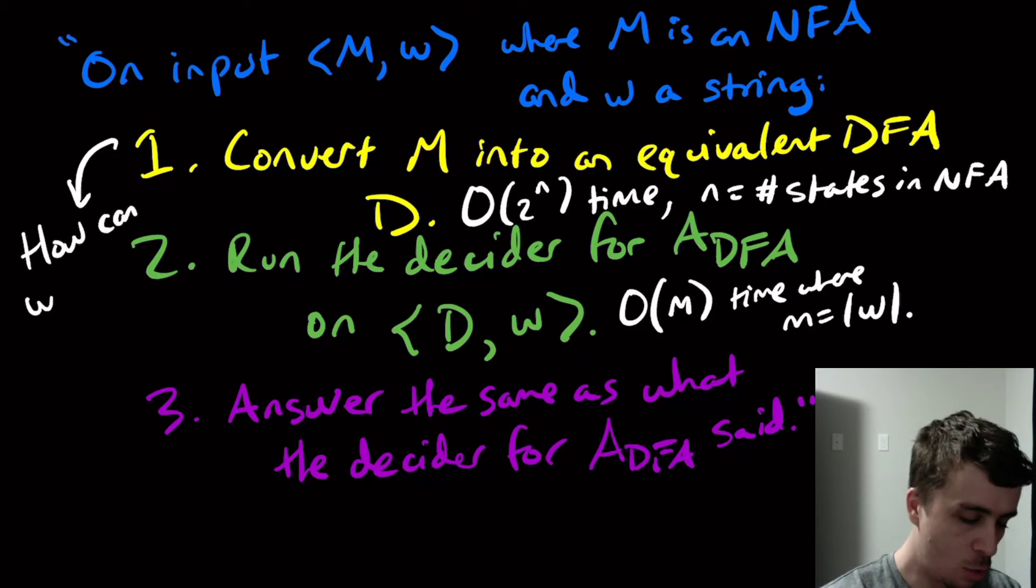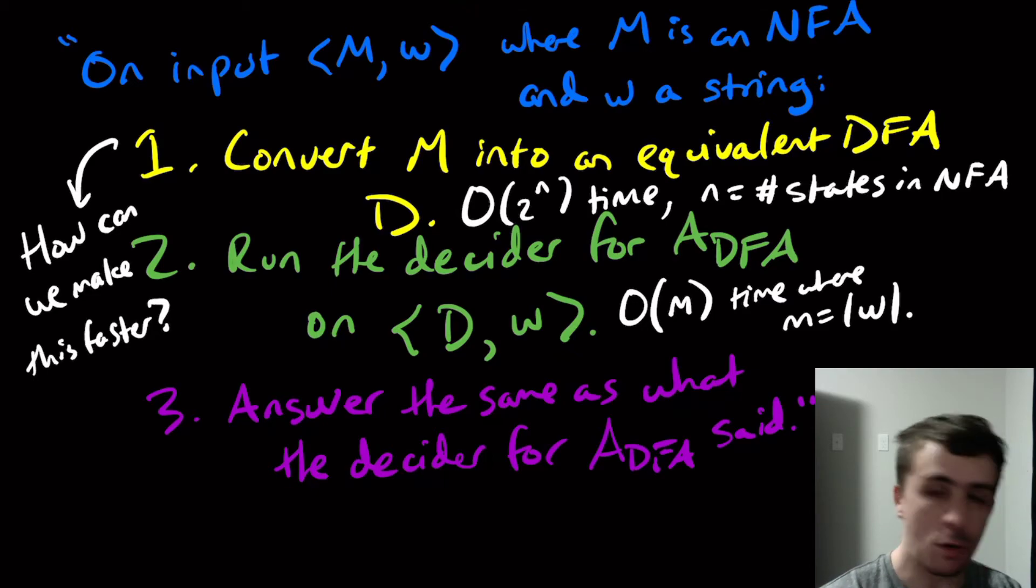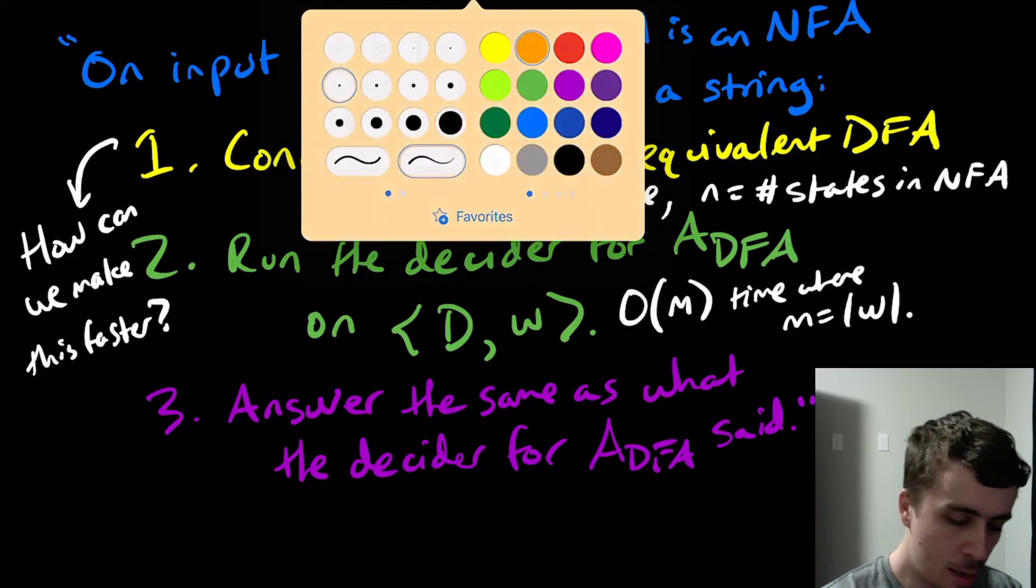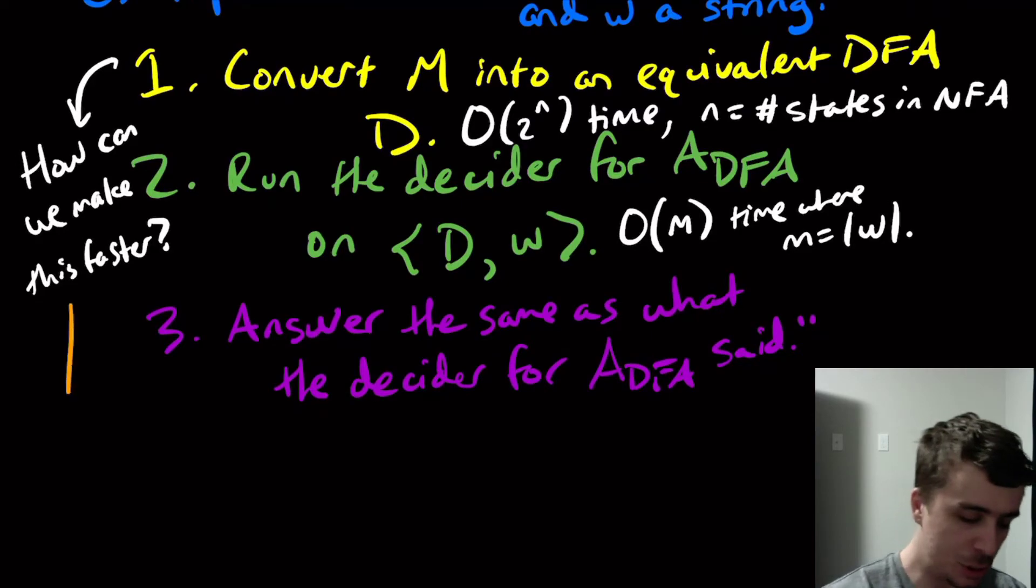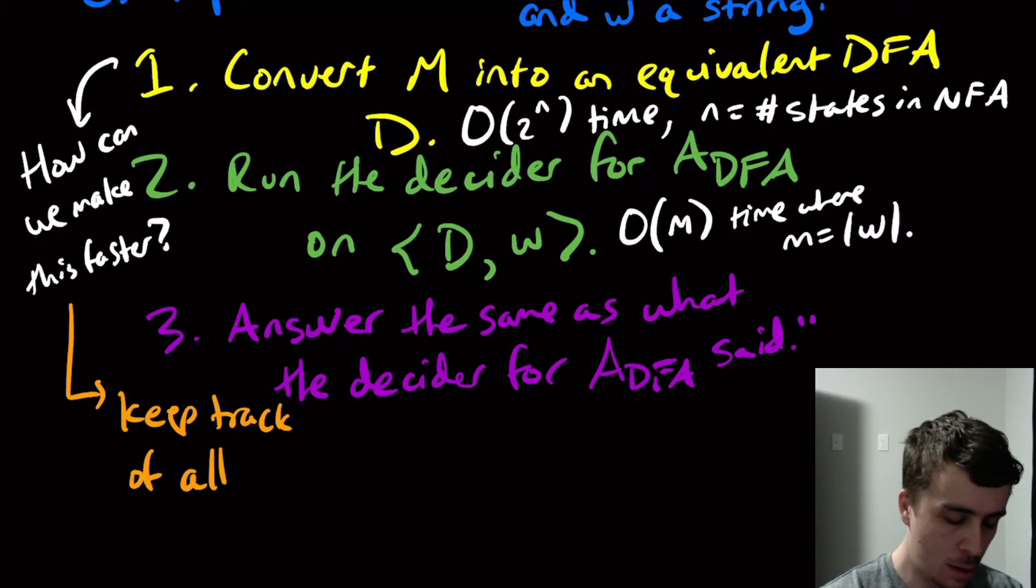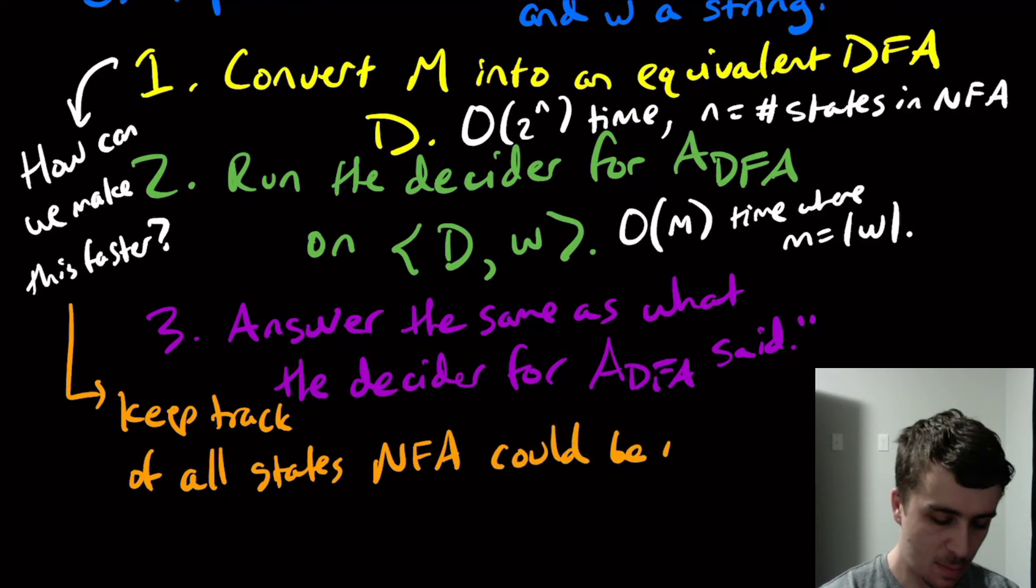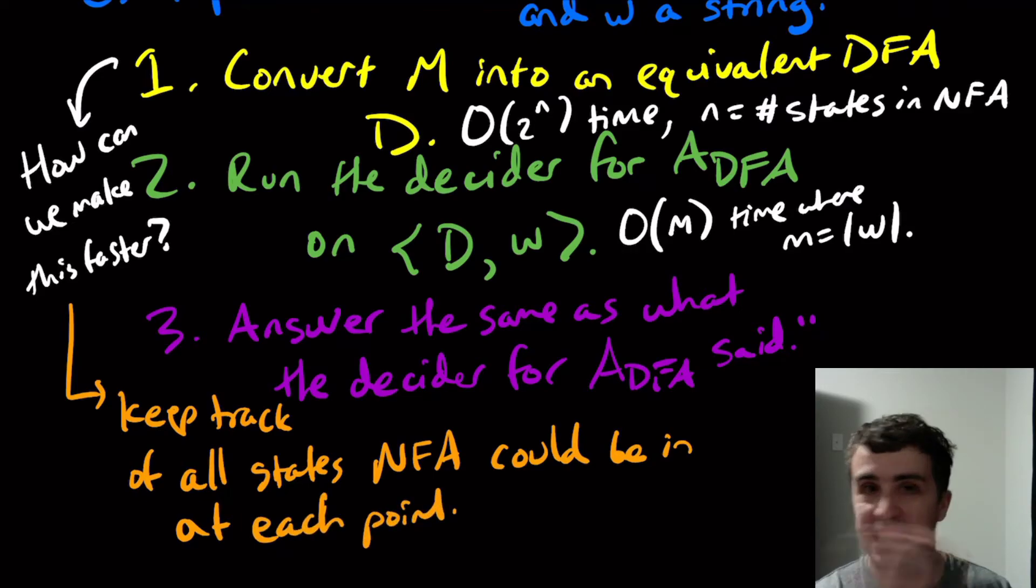It's not really required for this, but it's just a good thought experiment. The way to actually make this faster is to keep track of all states the NFA could be in at each point. So this is exactly the idea behind the build your states as you go method, the one that we built the DFA for. And we excluded a lot of states because they just weren't possible.